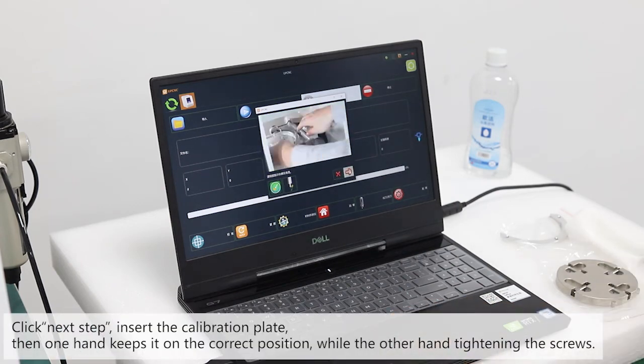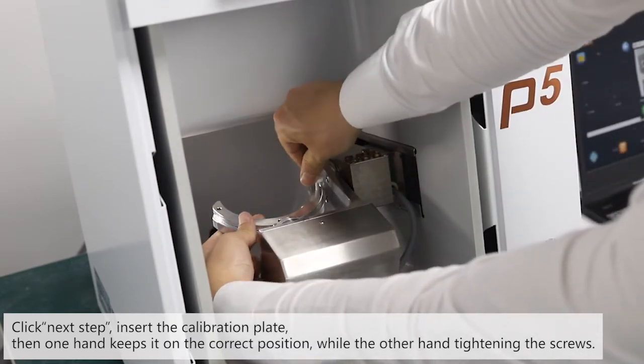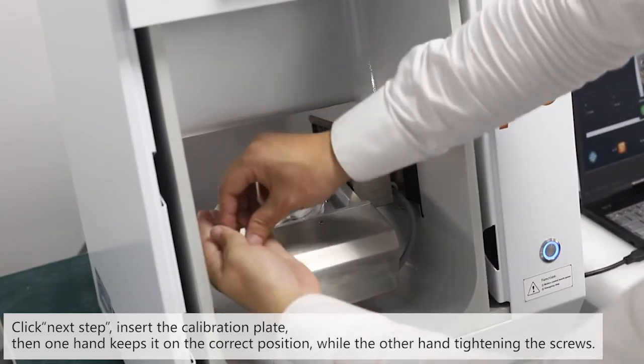Click next step. Insert the calibration plate. One hand keeps it in the correct position while the other hand tightens the screw.